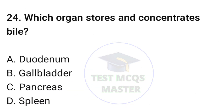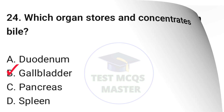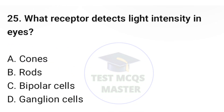Question number twenty-four: which organ stores and concentrates bile? The correct option is B, gallbladder. Question number twenty-five: what receptor detects light intensity in eyes? The correct option is B, rods.